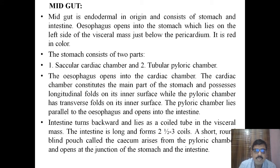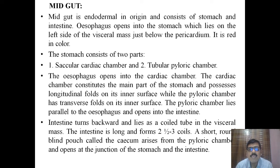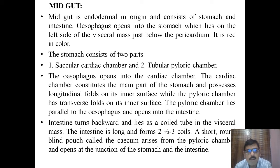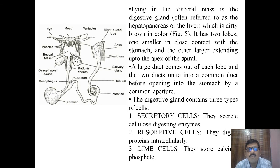After the foregut, the next part is the midgut. The midgut is endodermal in origin and consists of the stomach and the intestine. The esophagus opens into the stomach which lies on the left side of the visceral mass, just below the pericardium, and it is red in color. The stomach consists of two parts: the saccular or sac-like cardiac chamber and the tubular pyloric chamber.